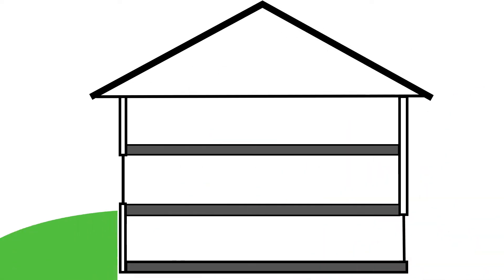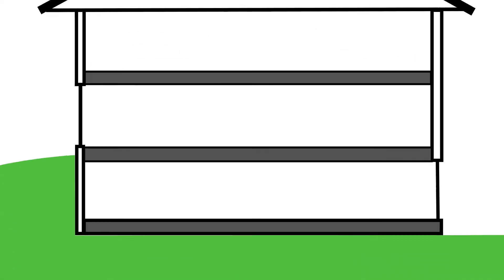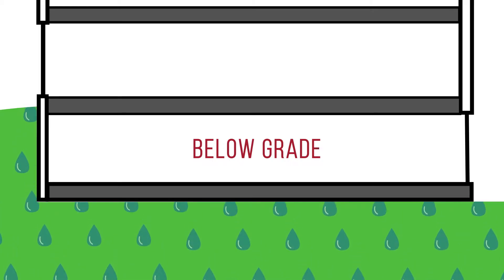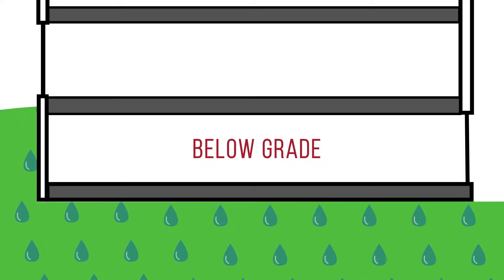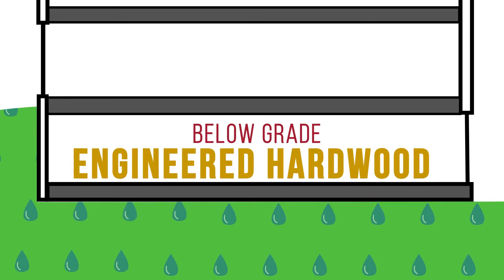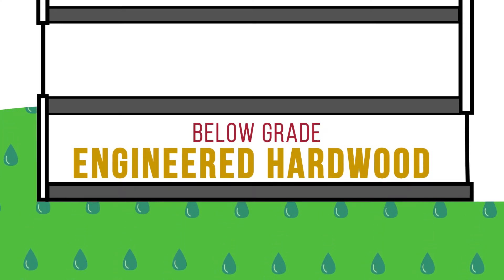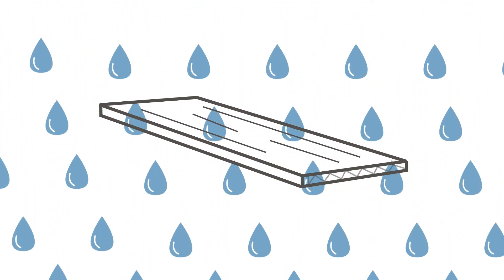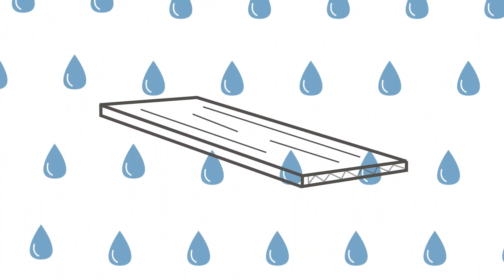The first grade we will talk about is below grade. This refers to a house's level that is below the earth's surface, such as a basement or the lower level of a split level house. The soil beneath the ground is constantly absorbing water. Because of this, we recommend engineered hardwood flooring as a good alternative. Most engineered hardwood can withstand the excess moisture that can occur in below grade environments.